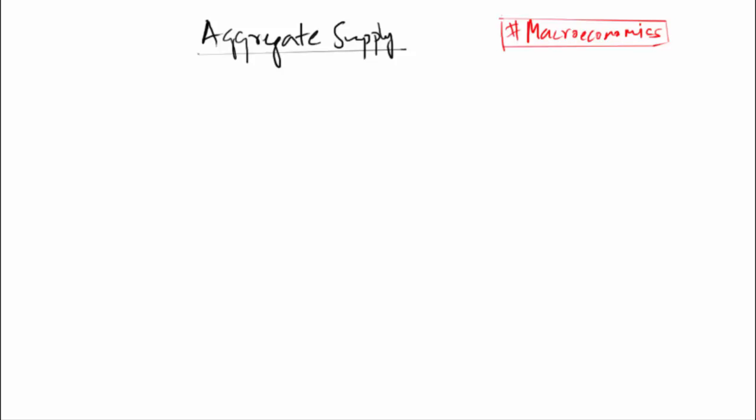In this video we are going to understand the term aggregate supply. The formal definition goes like this: aggregate supply of an economy is the amount of output produced by firms in the economy.